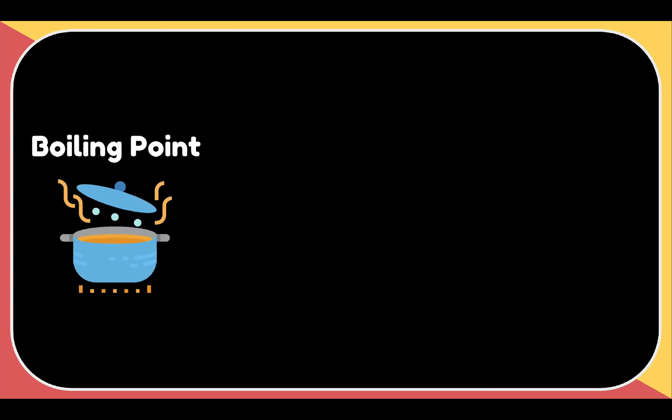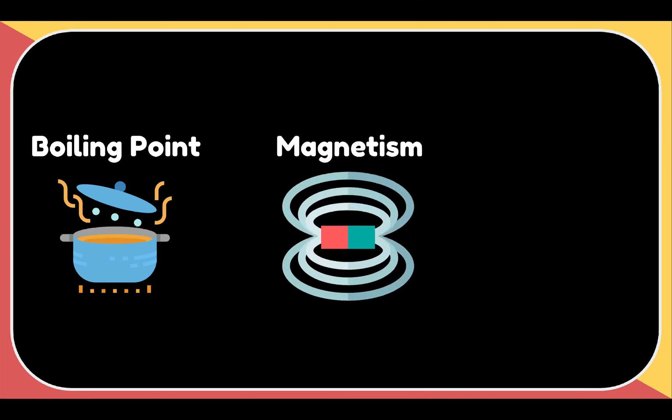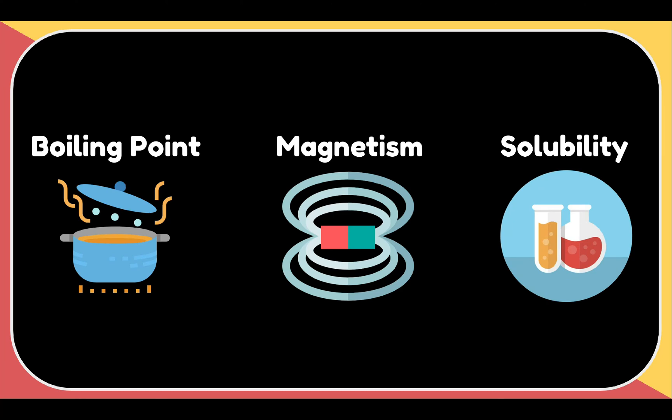Physical properties also include boiling point or melting point, which is the temperature at which something boils or melts. We also have magnetism, whether or not something is magnetic. Lastly, we have solubility, or how easily something dissolves in another substance.